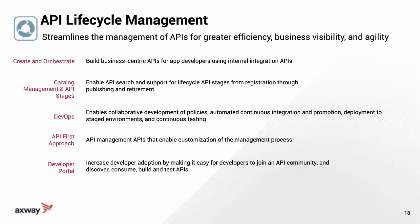Let's begin with a look at API lifecycle management. This is all about streamlining the people and processes of APIs. You've got the ability to create APIs and orchestrate them, giving them the functionality that's needed. Then you've also got a catalog that's a repository for APIs, as well as a place to manage the API stages from publishing through retirement.